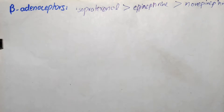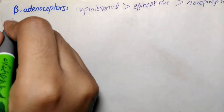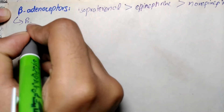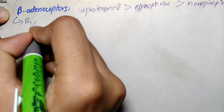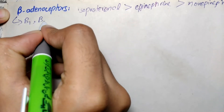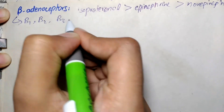Beta adrenoceptors can be subdivided into three major subgroups: beta 1, beta 2, and beta 3, based upon their affinity for adrenergic agonists and antagonists.